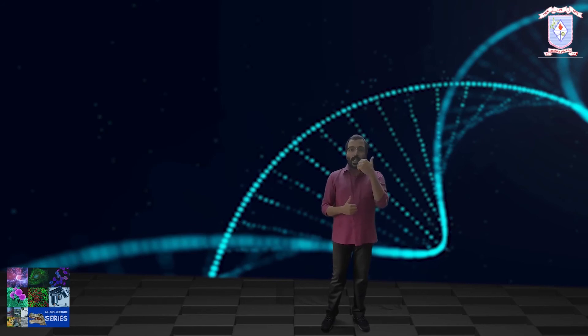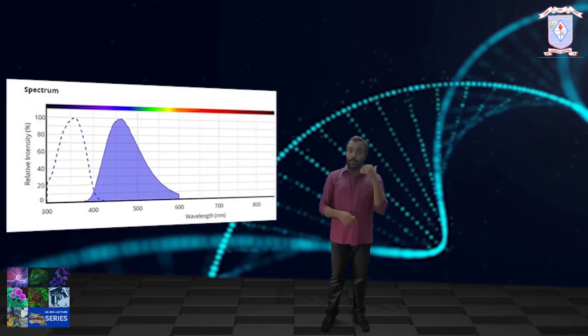When bound to double-stranded DNA, DAPI has an absorption maximum at a wavelength of 358 nanometers and its emission maximum is at 461 nanometers. Upon excitation, DAPI releases bright blue fluorescence that can be detected using blue or cyan filter sets.